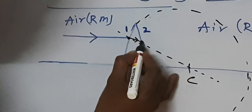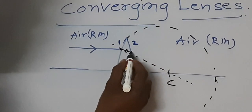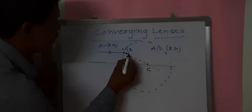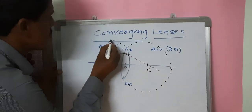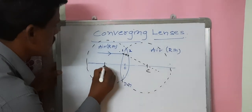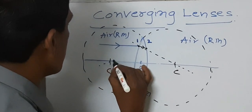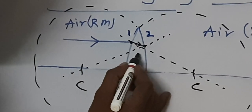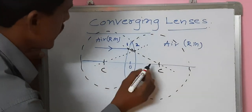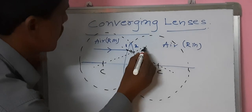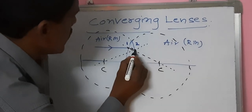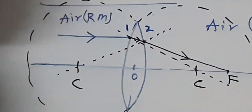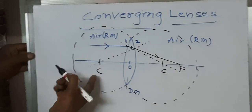At the second refracting surface, refraction takes place again. The ray travels from the denser medium lens to the rarer medium air. I draw the normal by extending this surface as part of another sphere whose center is C. When the light ray travels from denser medium to rarer medium, it bends away from the normal. This is the location of the focus. From this, a convex lens is convergent in nature.